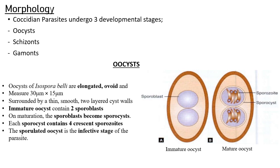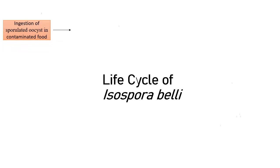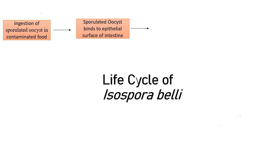The sporulated oocyst is the infective stage of the parasite. The life cycle begins upon ingestion of sporulated oocysts in contaminated food — remember, transmission is via fecal-oral transmission. The sporulated oocyst travels through the GI tract and goes to the surface of the intestinal lumen.